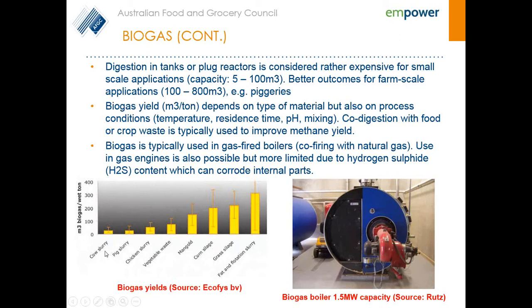For example, cow slurry has a very low biogas yield. But as soon as you start mixing that with crop waste or food waste, which have a higher yield, things start to get better. Shown here is also an example of a biogas boiler — it looks like it's running on biogas, but the difference in size reflects the option of co-firing with natural gas.